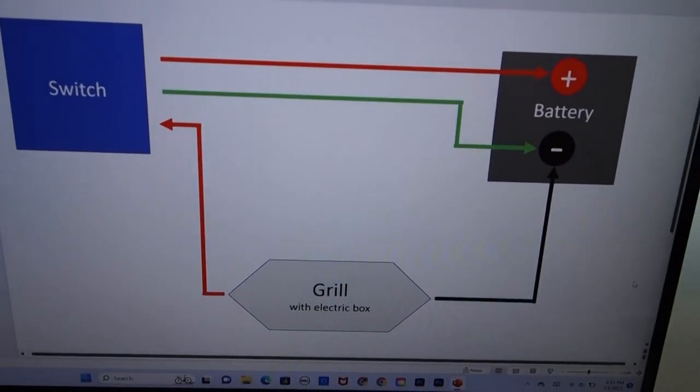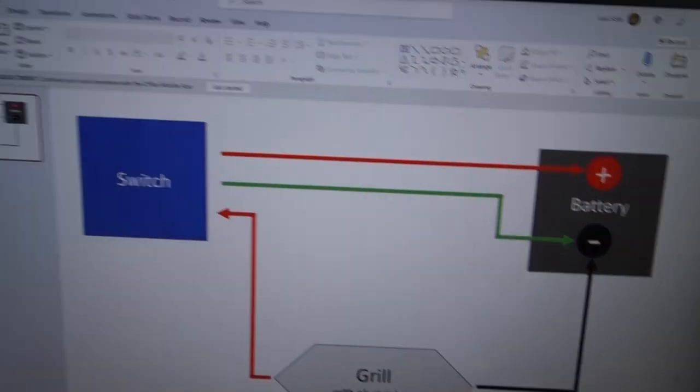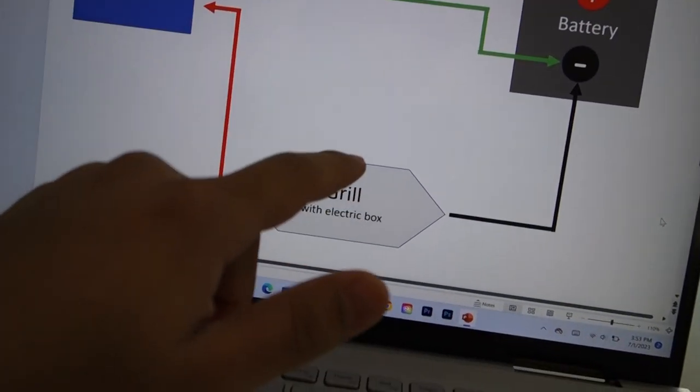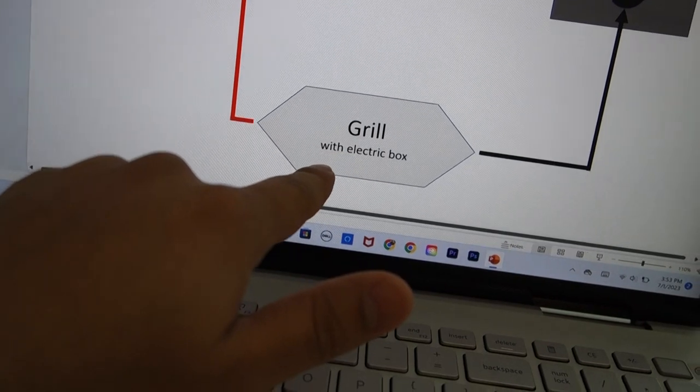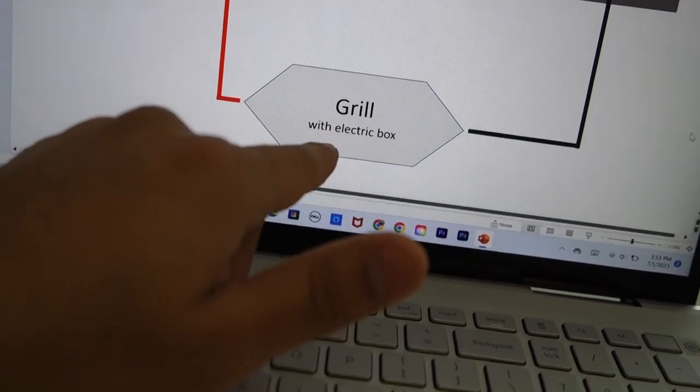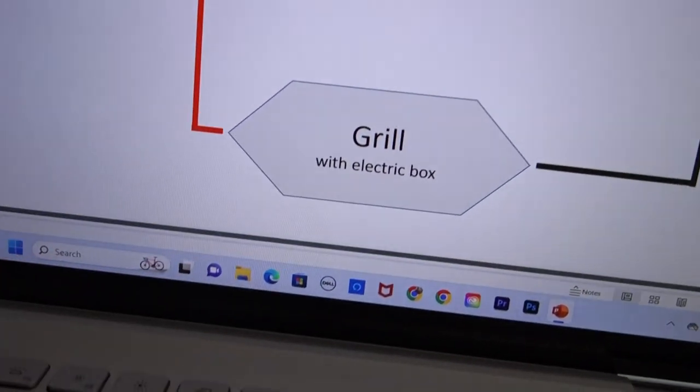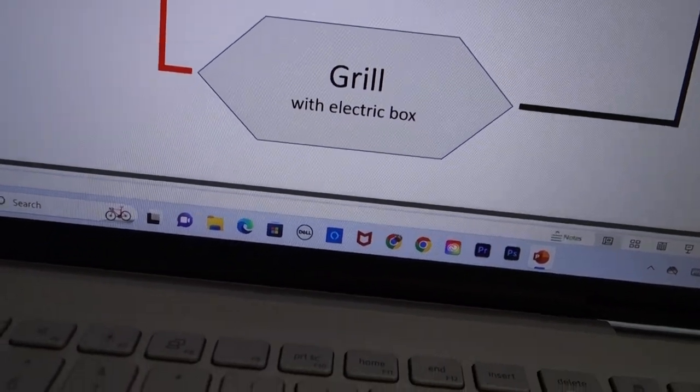Here I made a diagram to help you guys out from my knowledge and understanding. Here is the grill with electric box. The grill came with two wires that you plug in, then it runs to the electrical box. That electrical box split to two different wires. That's where it starts.